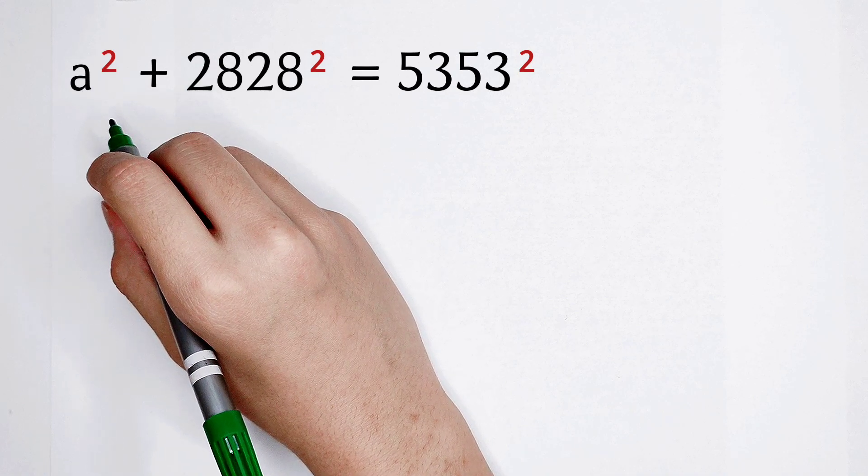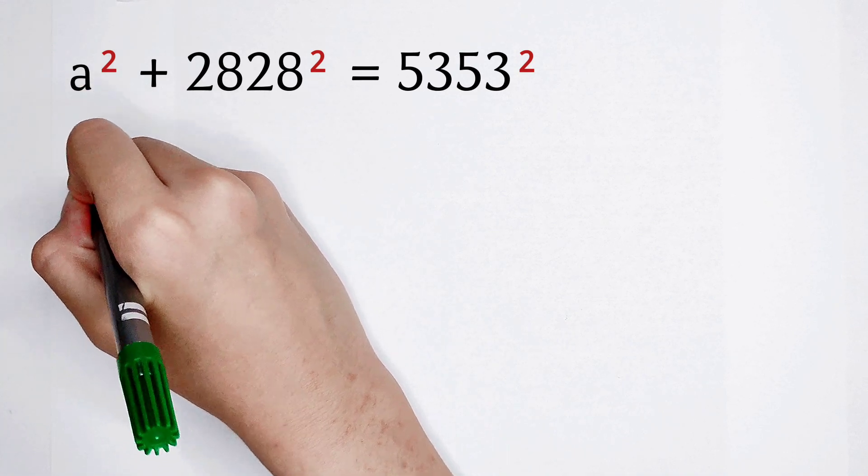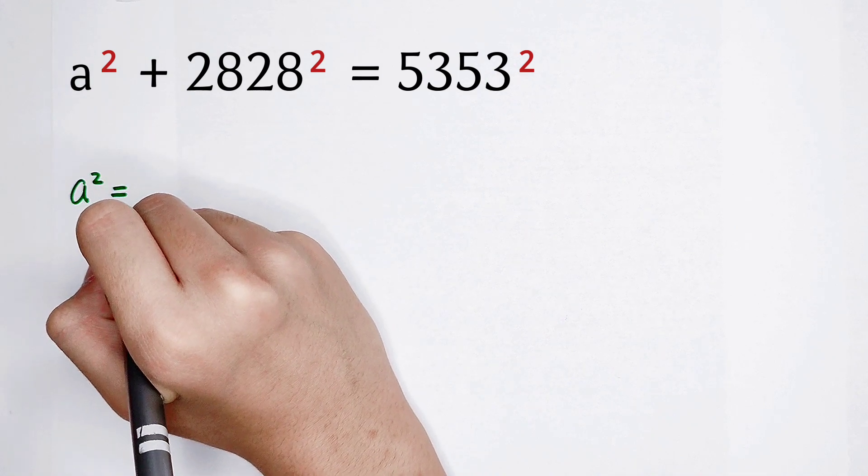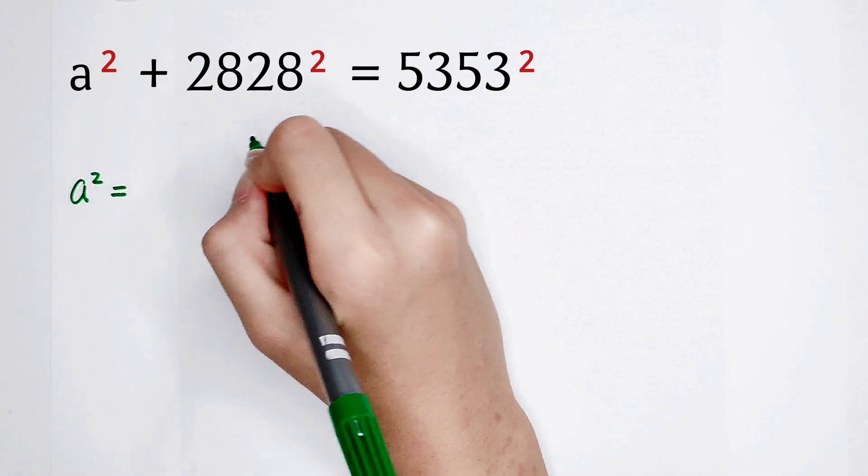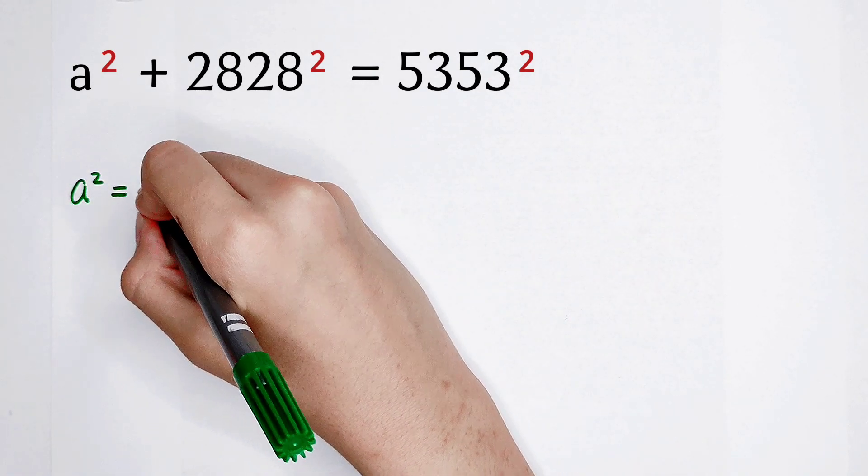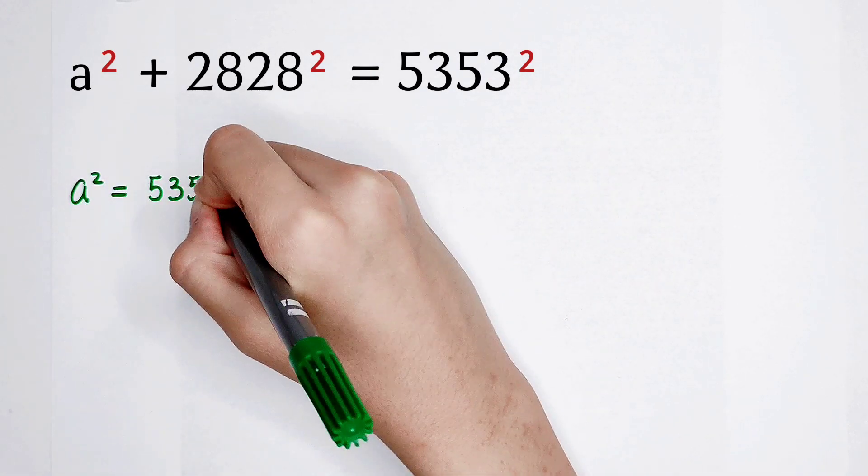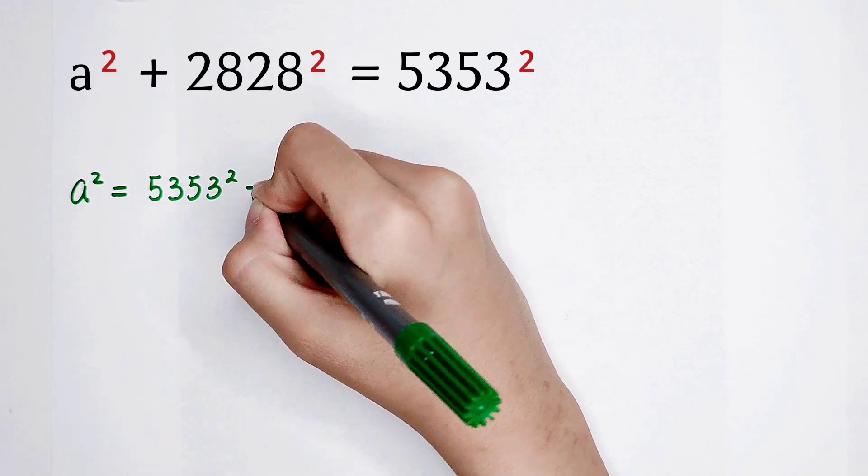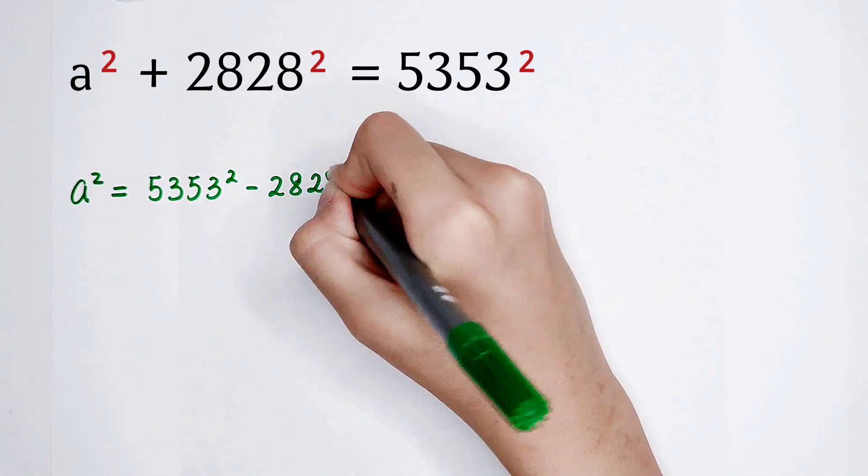Now, we just leave a² on the left hand side. So that means we move the 2828² to the right hand side.